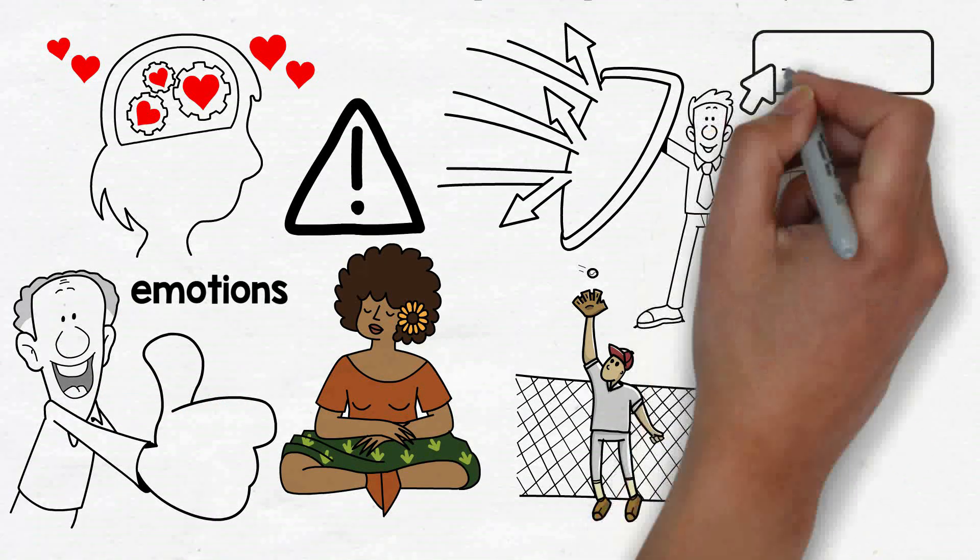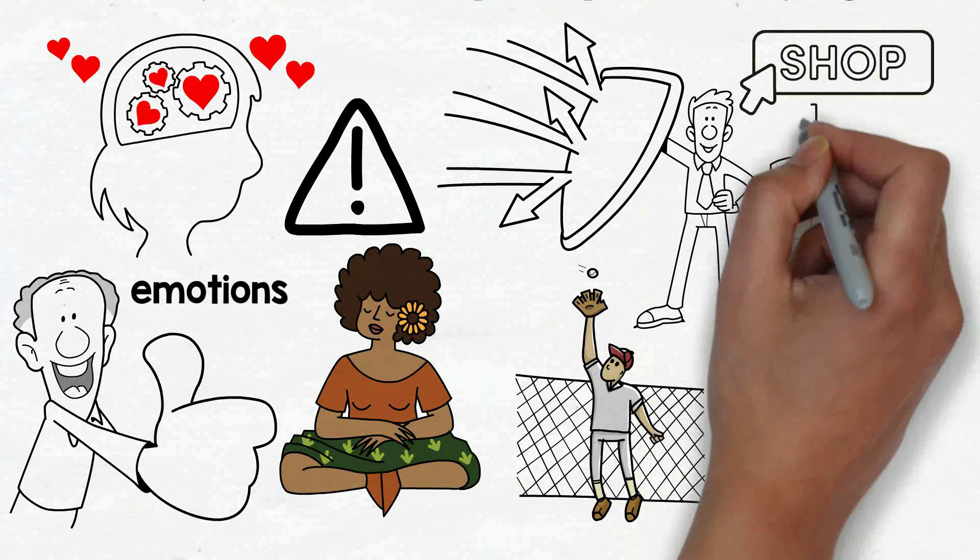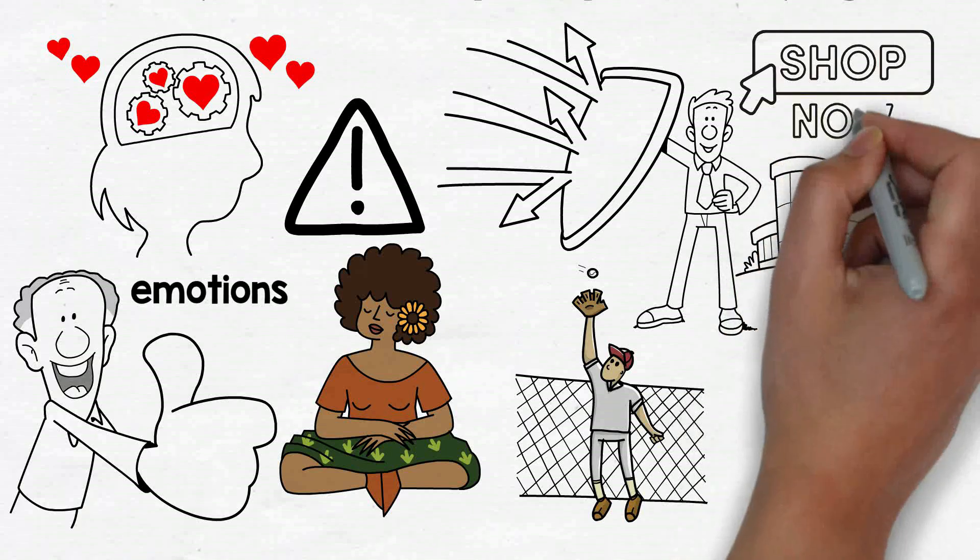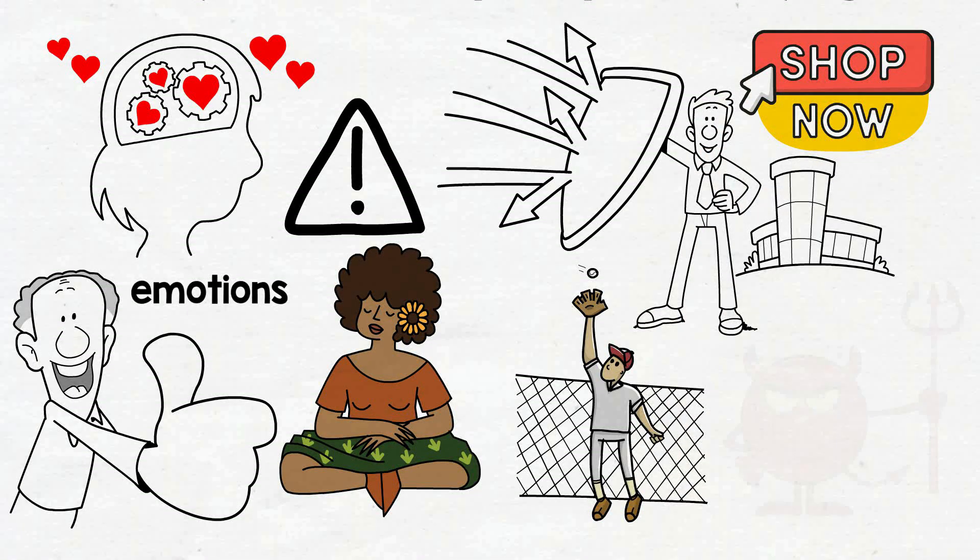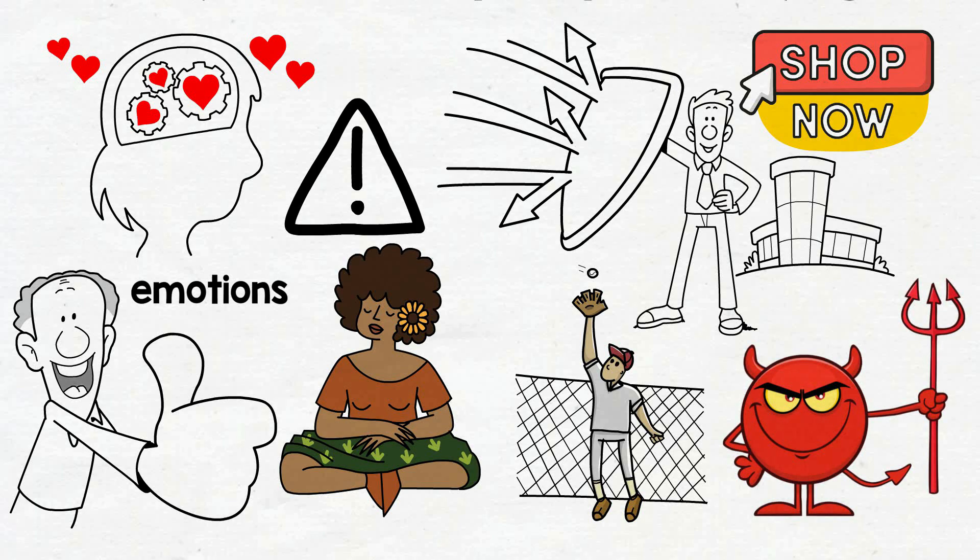Hold on. Purely emotional decisions are a proven way to allow impulse shopping to take over. Sneaky marketers are aware of this. To get you to buy, they'll exploit emotional appeals in their advertisements.